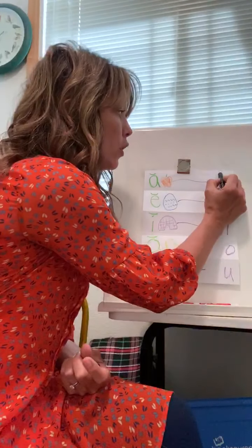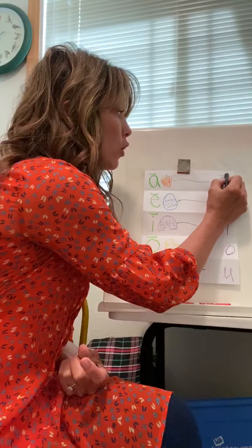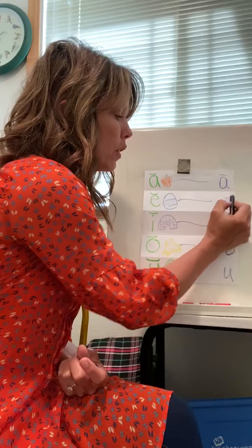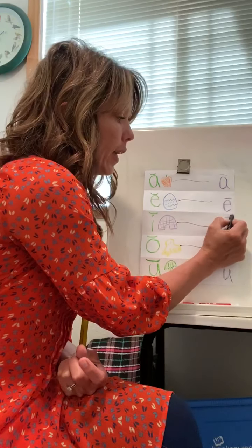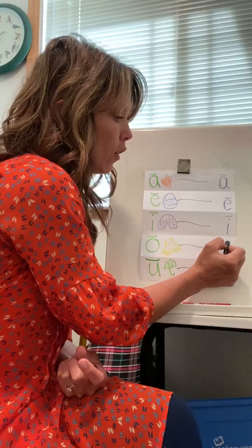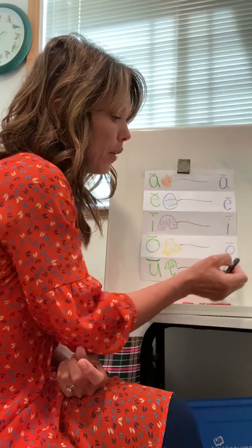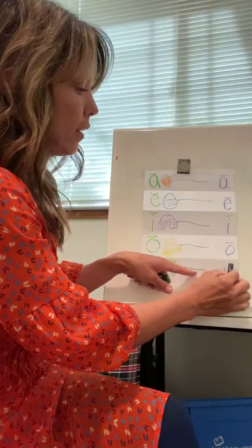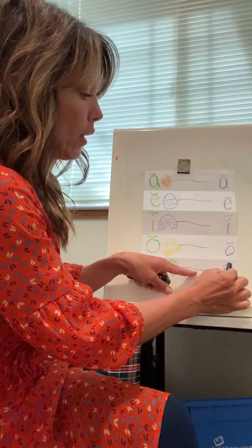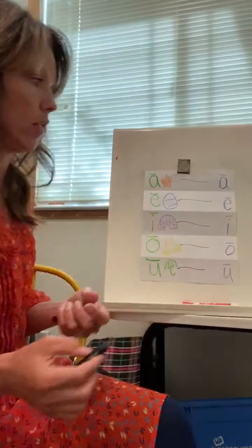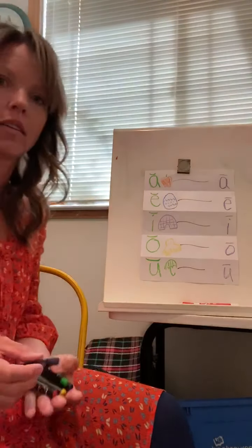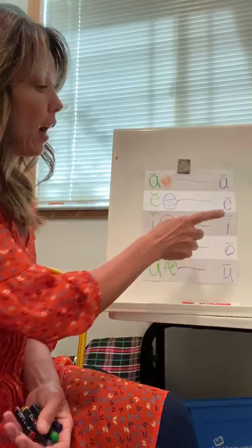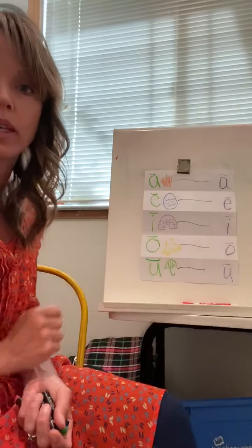I'm also going to show you how to show that it's a long vowel. You put a line over the top of the letter. So that's how you show that it's a long vowel. So we have our vowels — A, E, I, O, and U again.